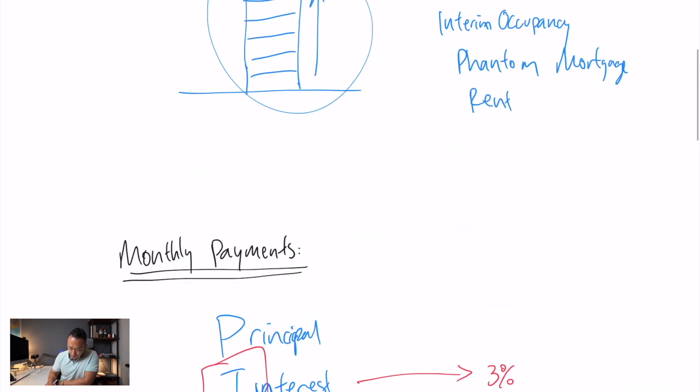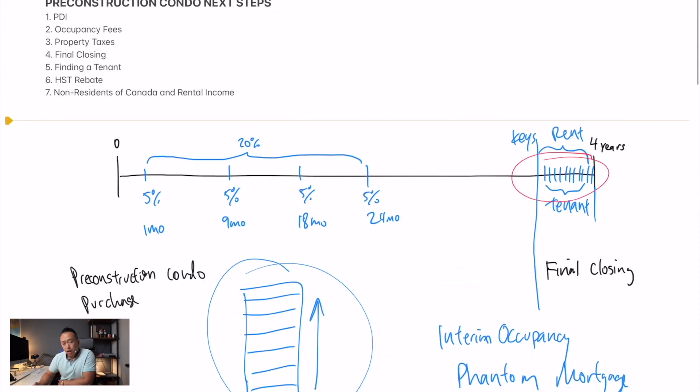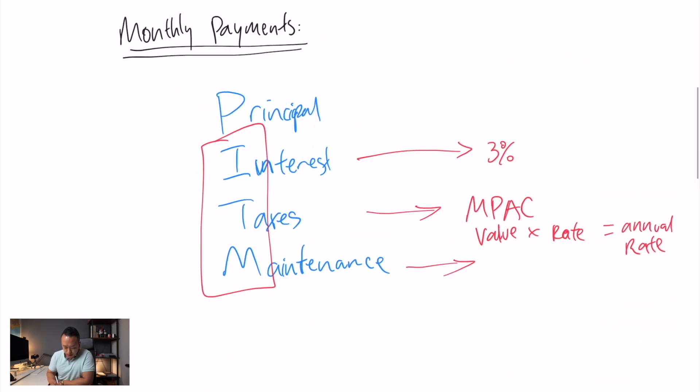So how MPAC works is generally they give you a value and they multiply it by the city rate. And right now in Toronto, it's about 0.61% and they come up with an annual tax rate. During that time of occupancy, this period, I think it usually lasts about six to eight months, depending on the scale of the project. So you could see that when the tax finally gets assessed, it's after the project closing.